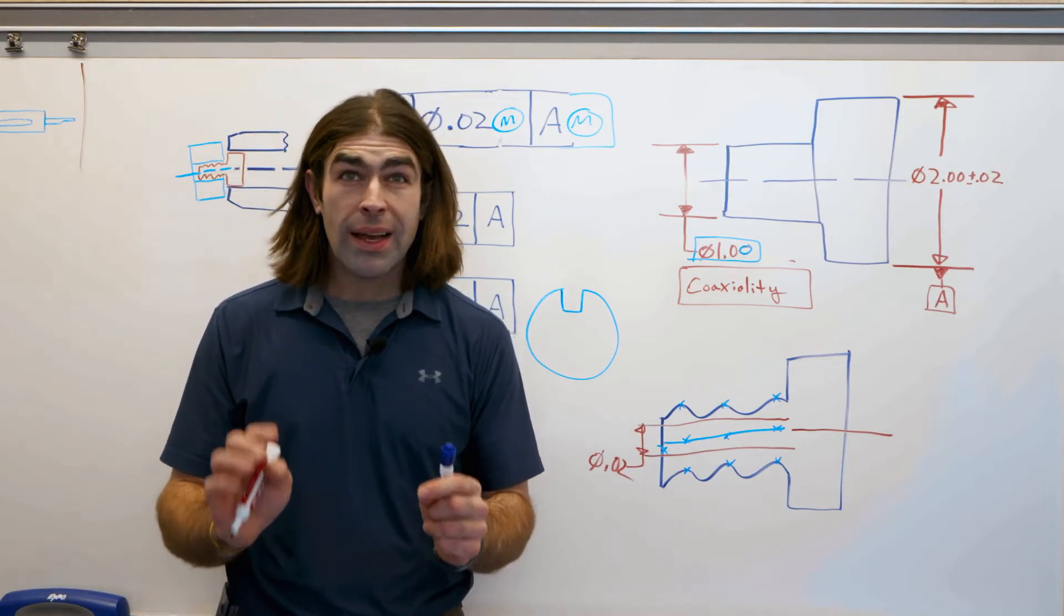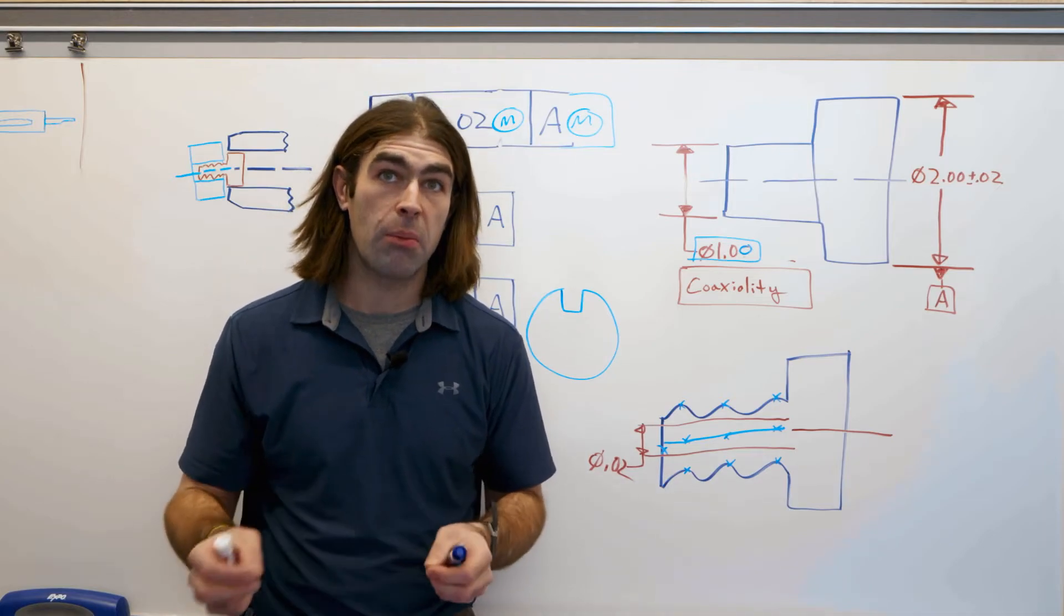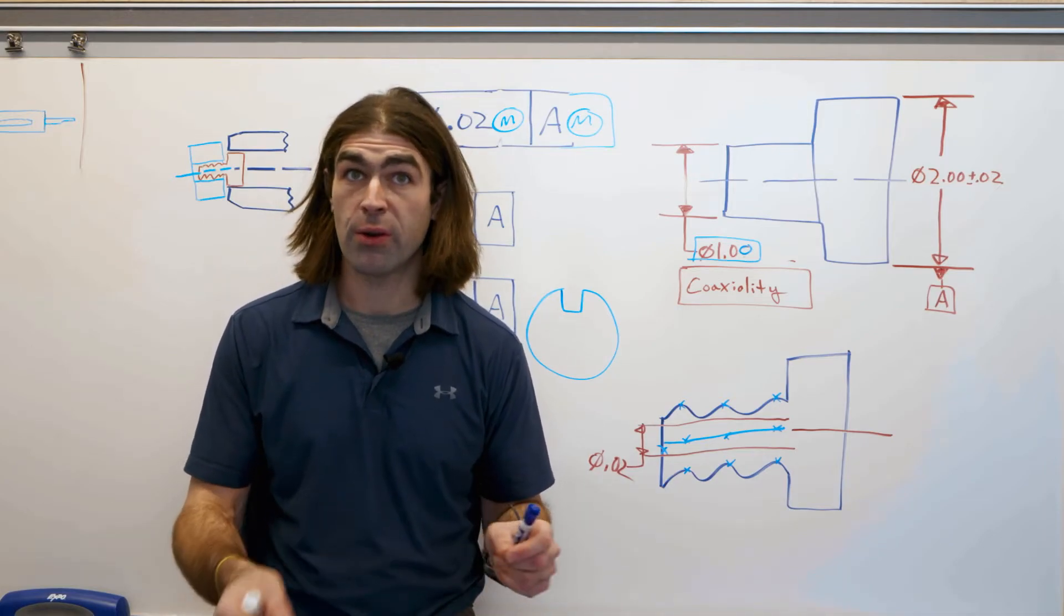So what concentricity is doing is separating the form requirement from run out. Otherwise, it's very similar.